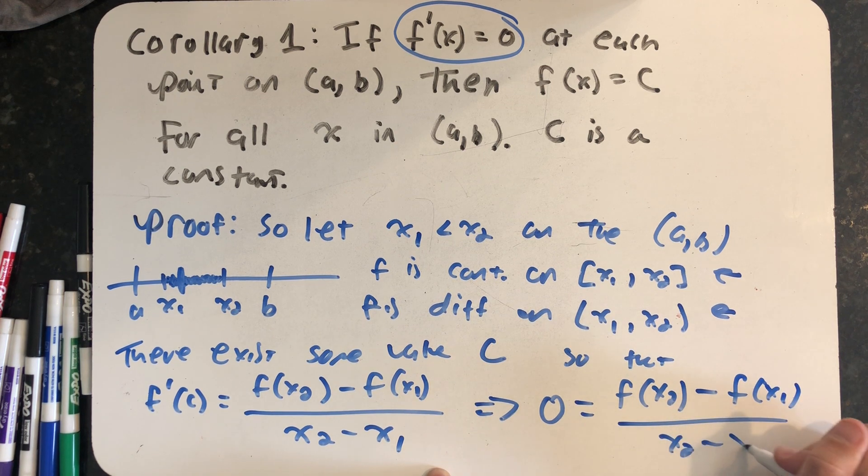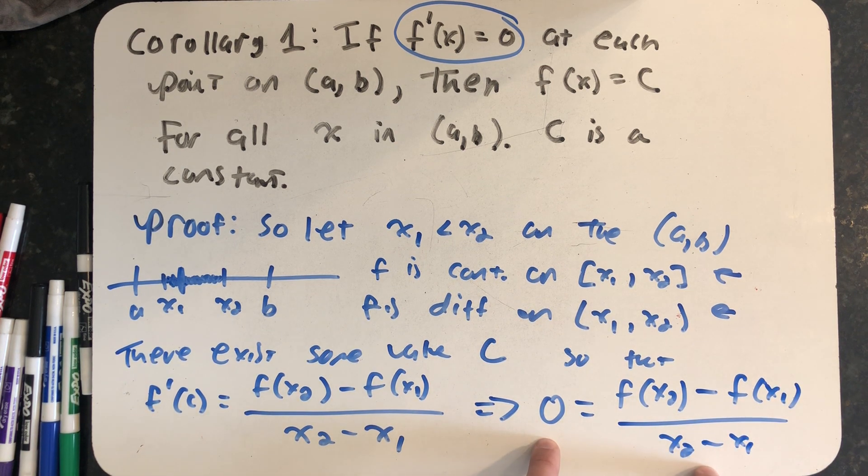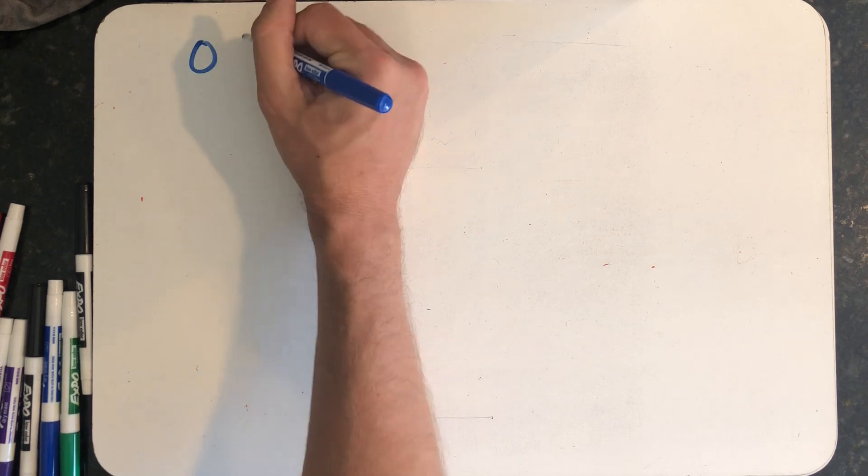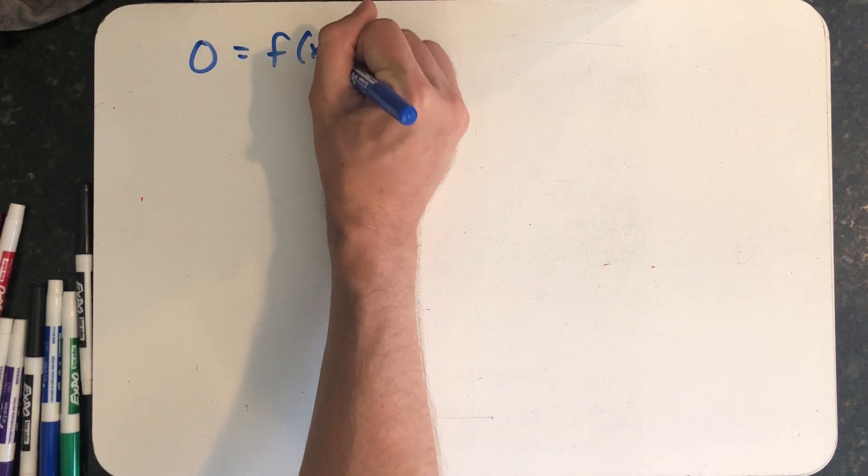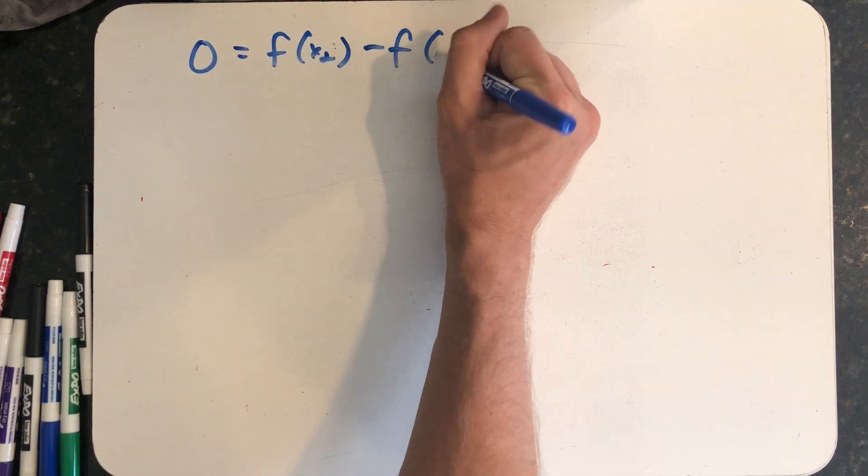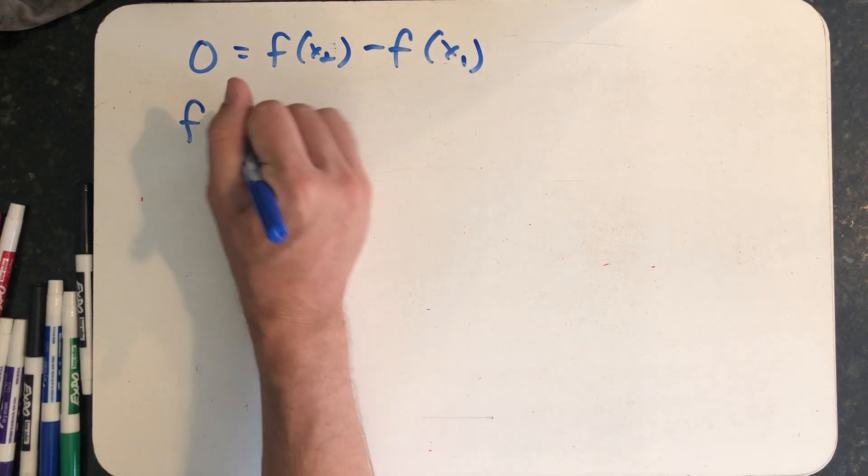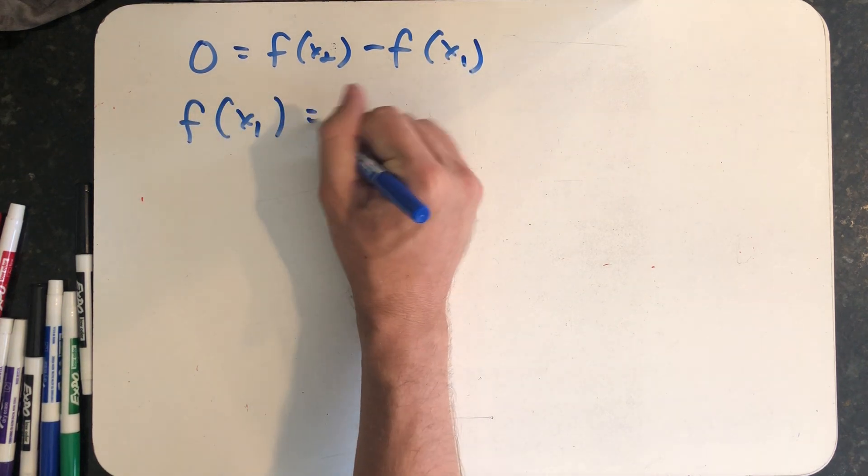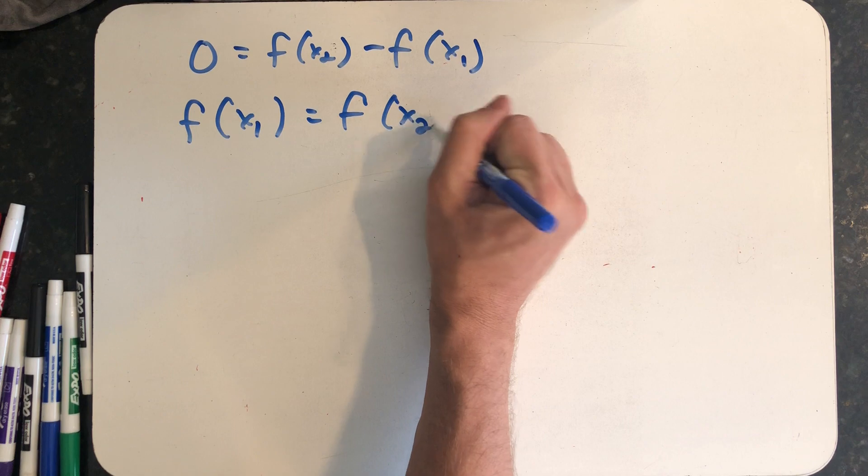Well, x2 minus x1 is a number, I can multiply both sides by that number, and that means zero is equal to the top of that fraction. So even better, I know that zero is equal to f of x2 minus f of x1, which means f of x1 is equal to f of x2.